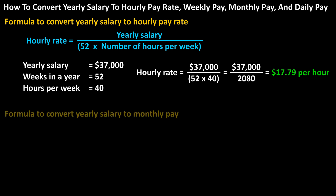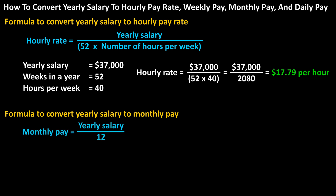Now for yearly salary to monthly pay. The formula to convert yearly salary to monthly pay is: monthly pay equals yearly salary divided by 12, because there are 12 months in a year.